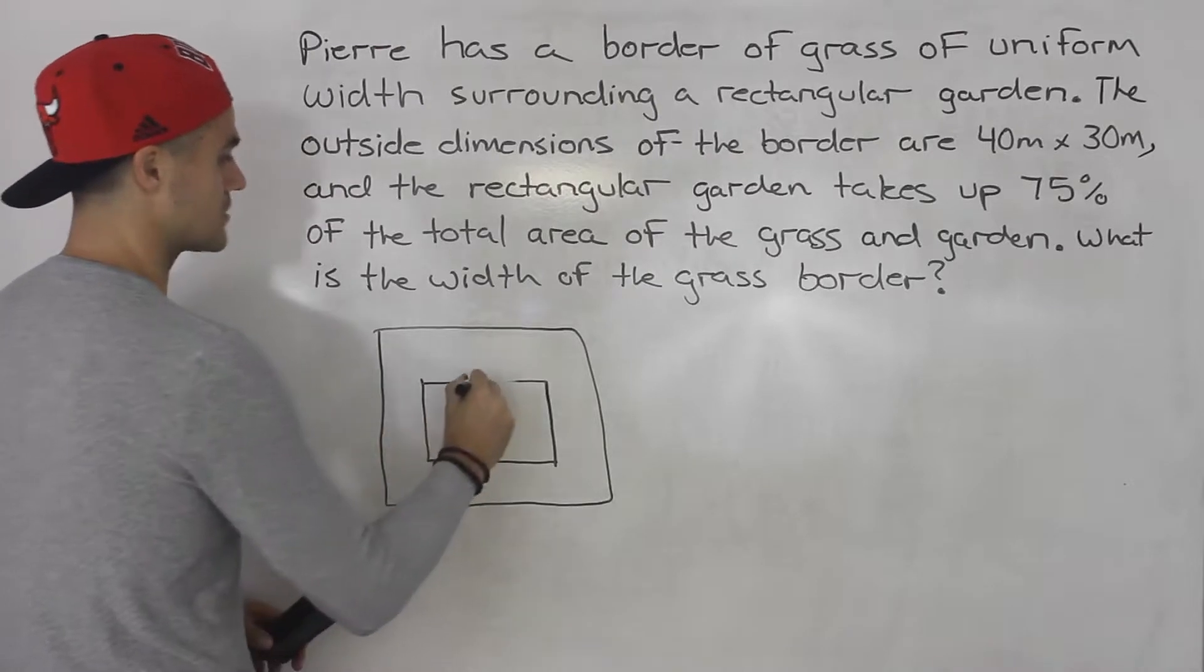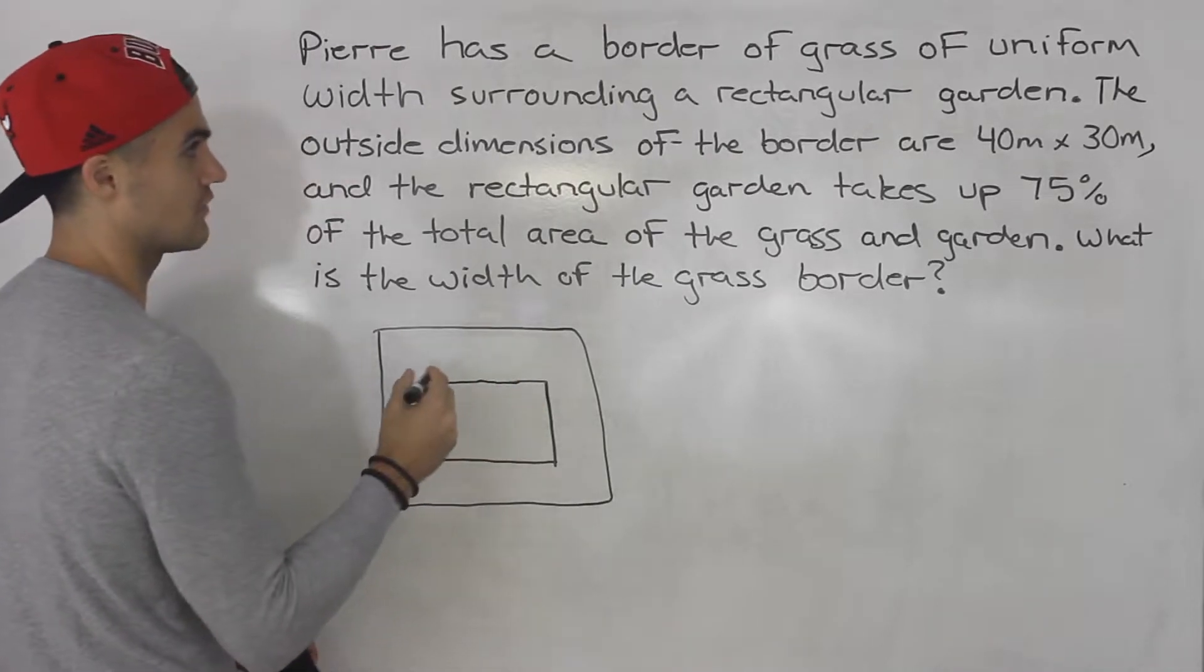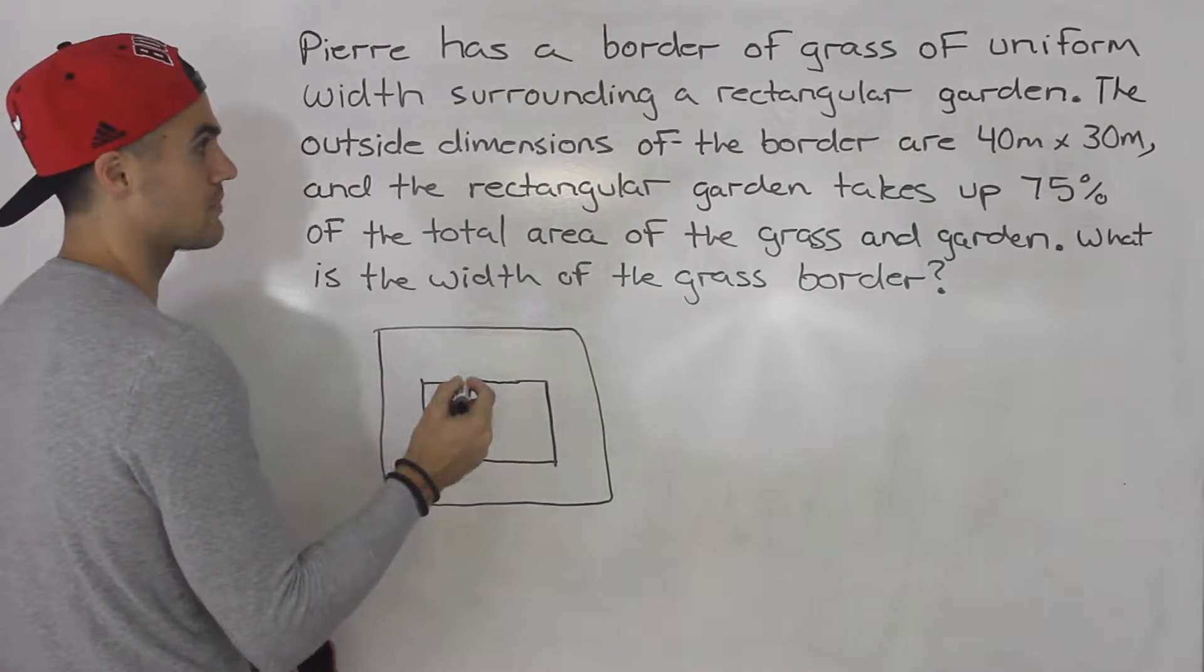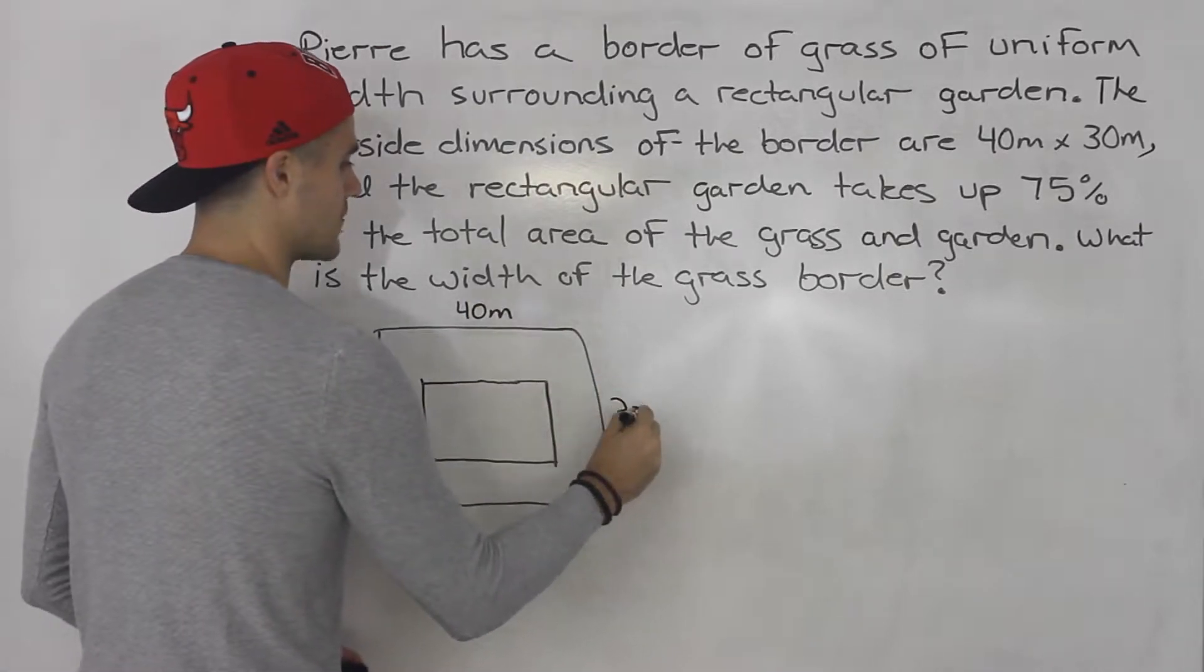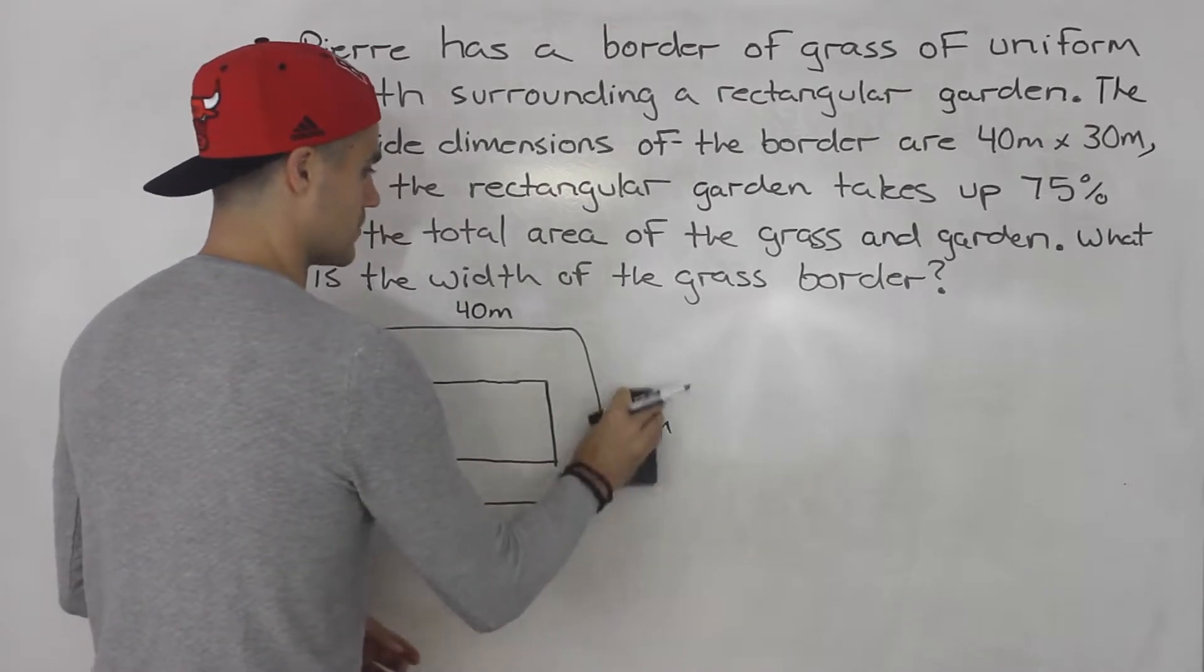And we're told the outside dimensions of the border are 40 meters by 30 meters. So the outside dimensions that's this here. Now let me put this 30 meters here.